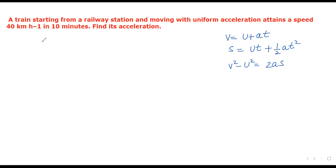Starting from the railway station, initial velocity U = 0 m/s. Final velocity is 40 km/h. Converting: 40 × 5/18 = 100/9 m/s. Time is 10 minutes = 600 seconds.